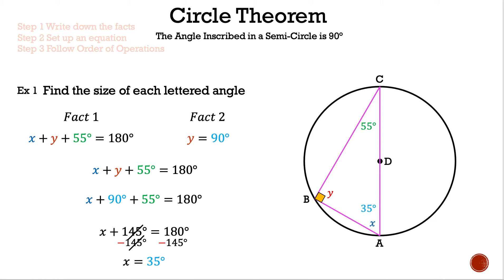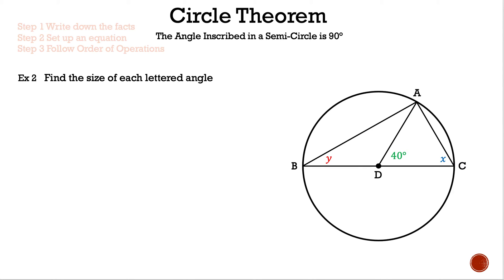Example two: find the size of each lettered angle. The image gives us y, 40 degrees, and x. Fact one: triangle ADC is an isosceles triangle, because segments AD and DC are radii, so two sides are equal. Therefore, angle DAC = angle ACD.